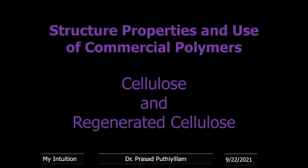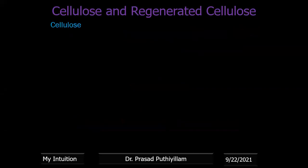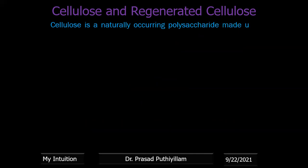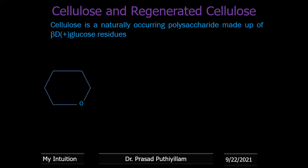Cellulose and regenerated cellulose is the last topic. Cellulose is a naturally occurring polysaccharide available in wood, cotton, and silk. It consists of glucose repeating units. The structure is a hexagonal ring containing one oxygen atom, drawn with H and CH2OH groups on one side, and OH groups alternating on the ring carbons.